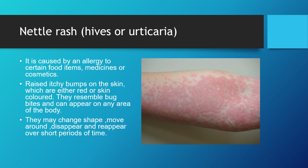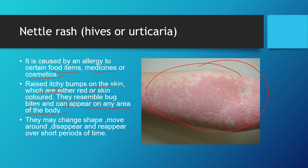The next common form of allergy is nettle rash, hives, or urticaria. It is caused by an allergy to certain food items, medicines, or cosmetics. Raised itchy bumps appear on the skin which are either red or skin-colored. They resemble bug bites and can appear on any area of the body. They may change their shape, move around, disappear, or reappear over short periods of time — at one phase of time you can see redness in an area, and after some time it has disappeared, then reappears again.